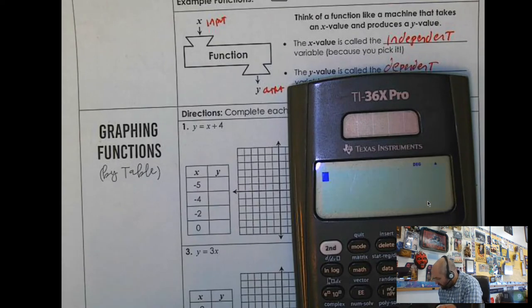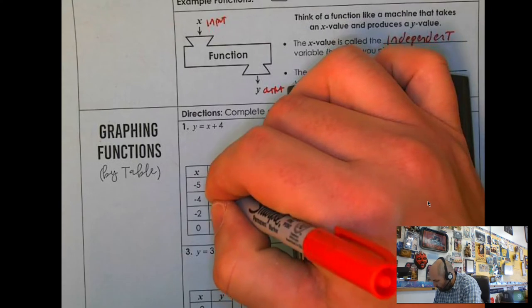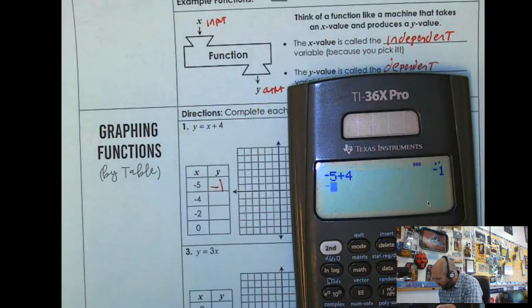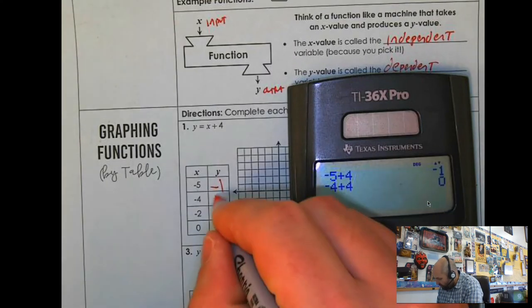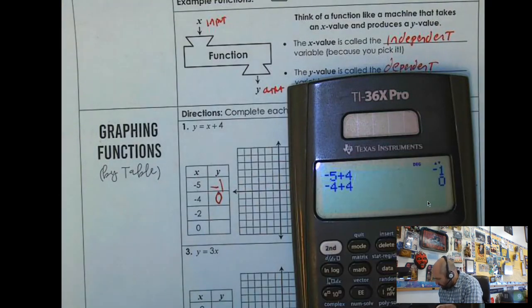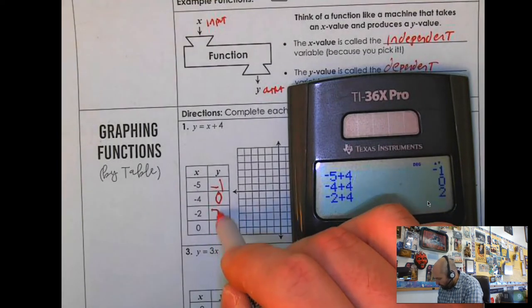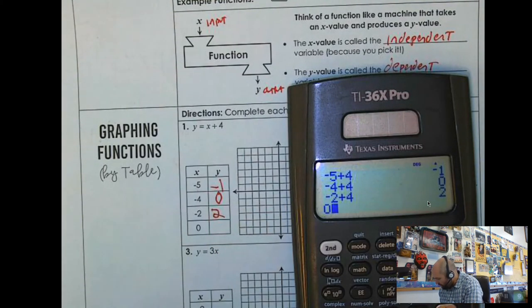I'm going to type in negative 5 plus 4 and that's negative 1. And I'm going to do negative 4 plus 4 and that's 0. And I'm going to do negative 2 plus 4 and that's 2. And then I'm going to do 0 plus 4 and that's 4.